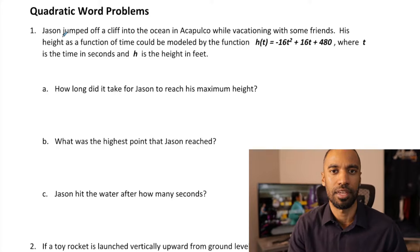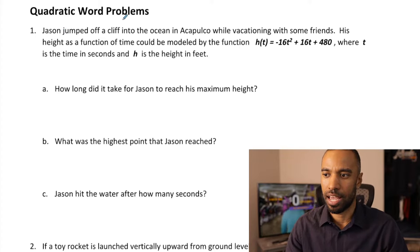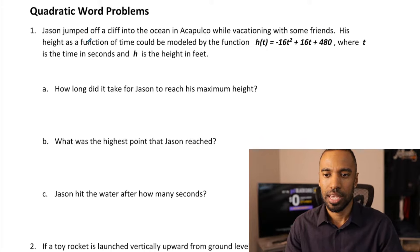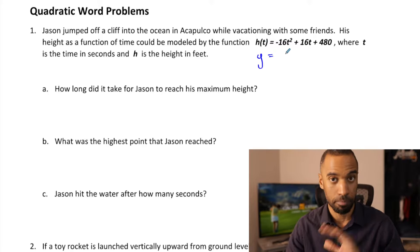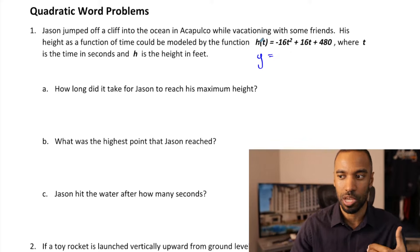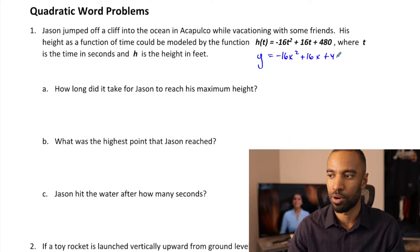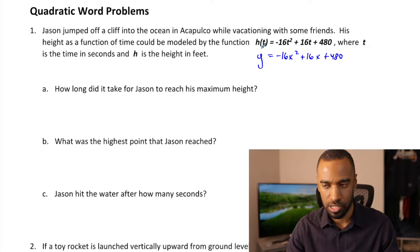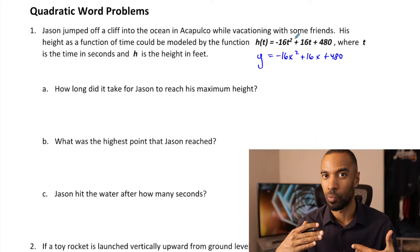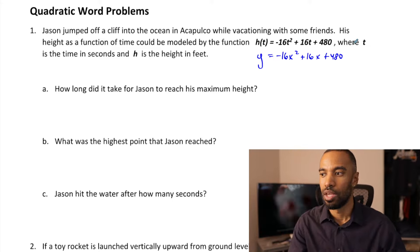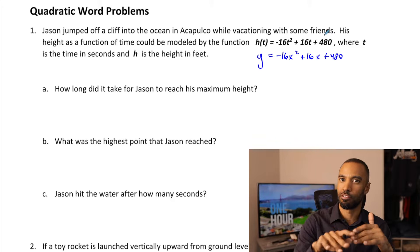A negative coefficient for t squared means an upside-down graph, so we'll be dealing with upside-down parabolas starting somewhere and possibly hitting a maximum — that's where we talk about the vertex. Let's start with number one. Jason jumped off a cliff into the ocean in Acapulco while vacationing with some friends. His height as a function of time is modeled by h(t) = negative 16t squared plus 16t plus 480, where t is time in seconds and h is height in feet.